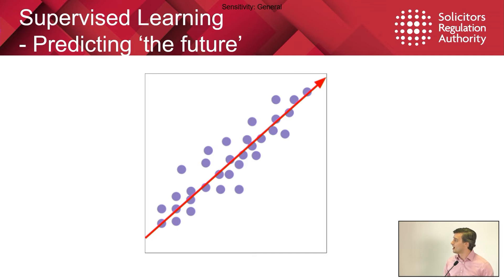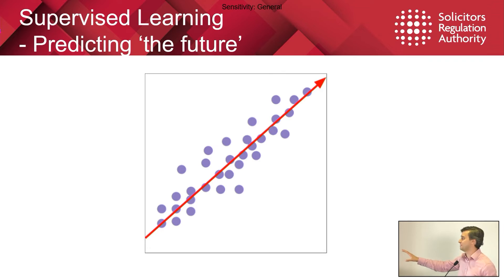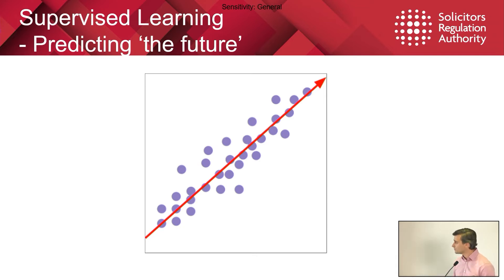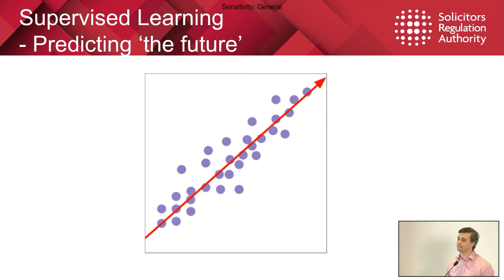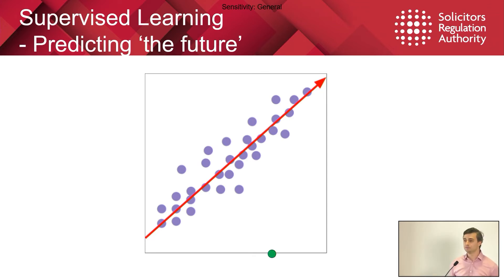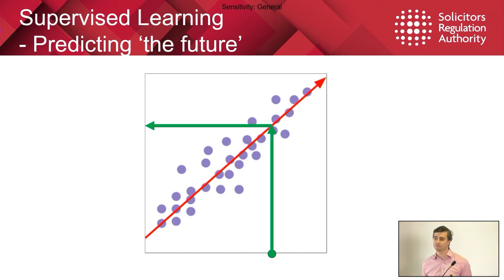Supervised learning — very similarly, we have a set of data points here in circles. In this case, let's say we're a big firm. We have each of these as a department within our firm. On the x-axis along the horizontal, we have how many people that department employs — how many fee earners — and up the y-axis is how much revenue that department generates each year. The red line that we can draw through this is our artificial intelligence model. This is really useful because let's say we've got some money to burn and we want to buy a new department. If we know it employs this many people, following patterns we've seen in the past, we could realistically expect to make about this much money from that new department. You can see why this is quite useful in projecting forwards and predicting the future.